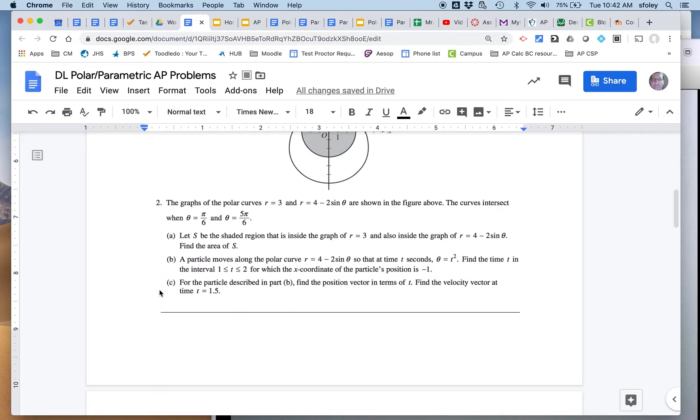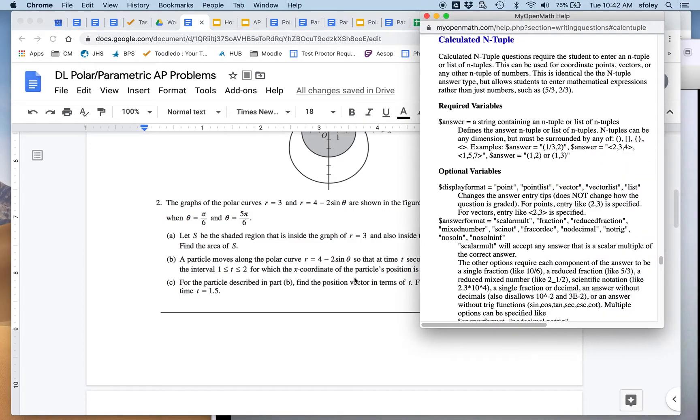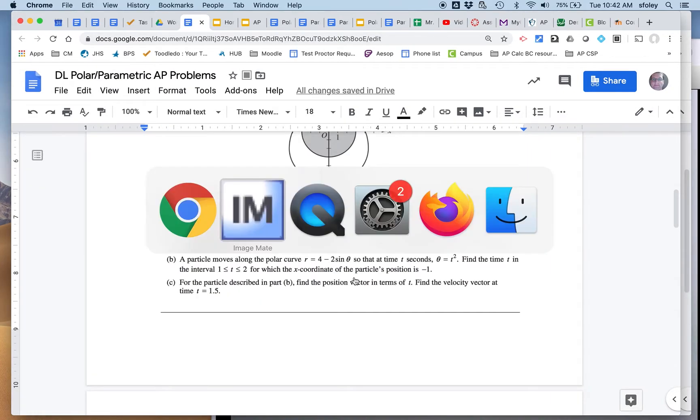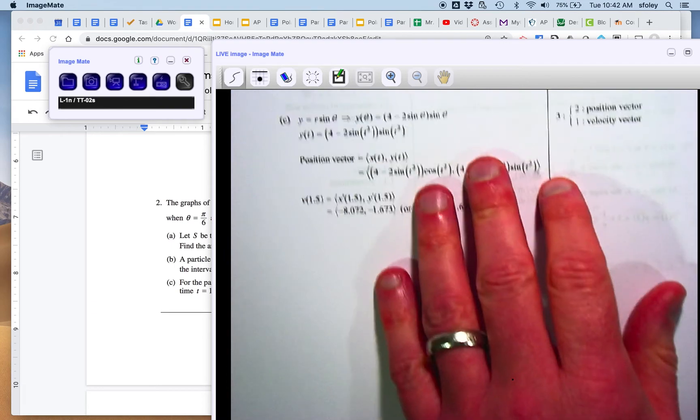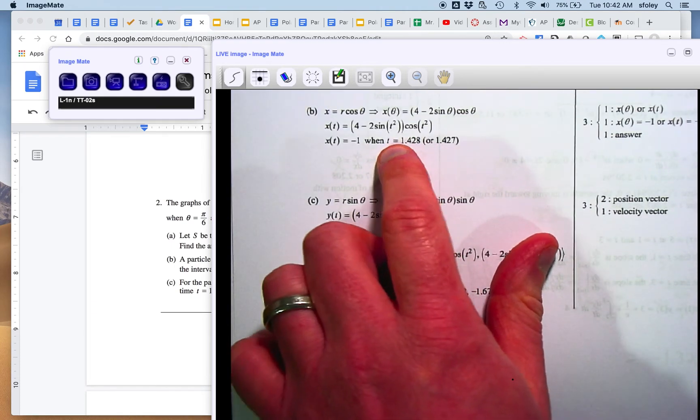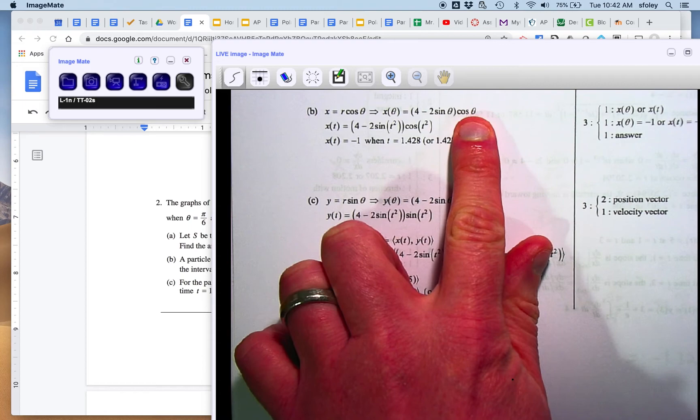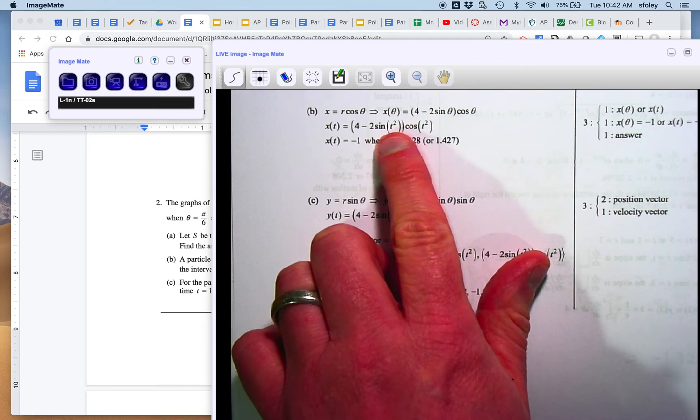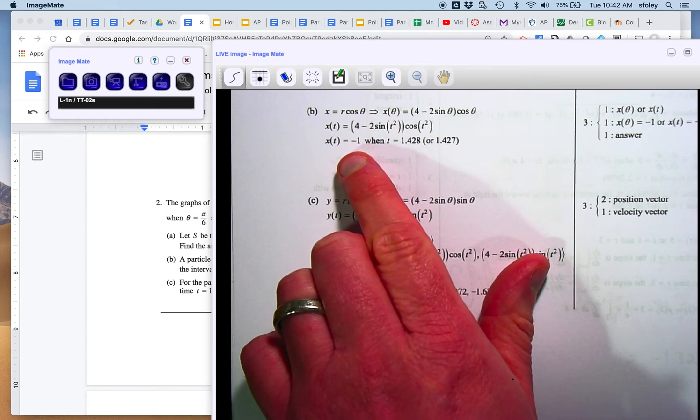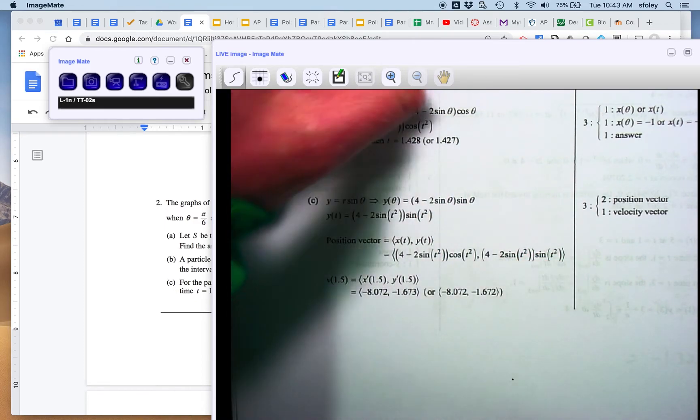And this is the part that's a little tricky here. They're telling you that theta is a function of time. And so it's moving along a curve, but now we're sort of parameterizing it with time. And so it says find the time at which the x-coordinate of the particle's position is negative 1. And this goes back to our relationship between polar and rectangular coordinates. We know x is r cosine theta. And so we take the equation for r, multiply it by cosine theta, and then we replace theta with t squared, as they told us to.